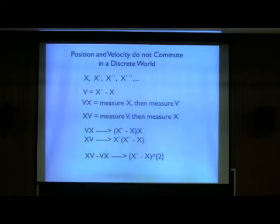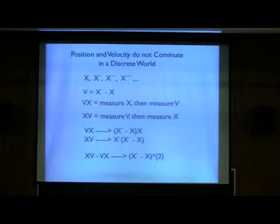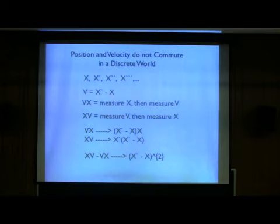That's sort of the main point: if you're measuring discretely and what you measure requires time, you'll be further along the sequence. So you get xv minus vx equals x-prime minus x squared, assuming all the x's commute. You get the square of the step that x took for the commutator, and things don't commute.